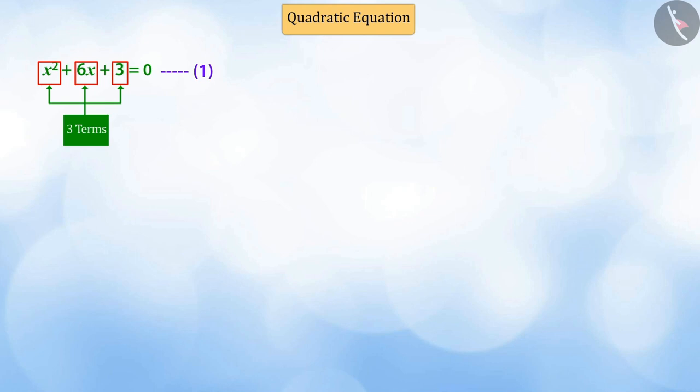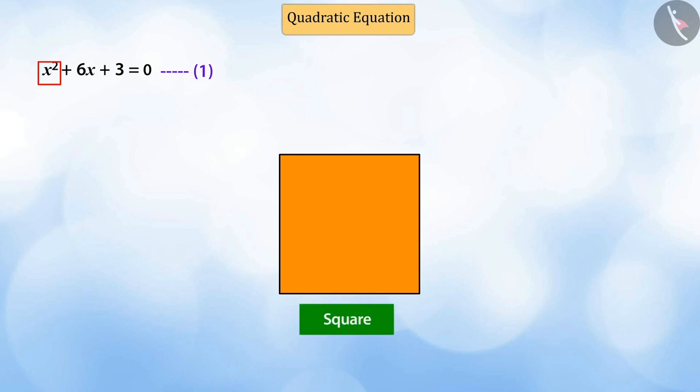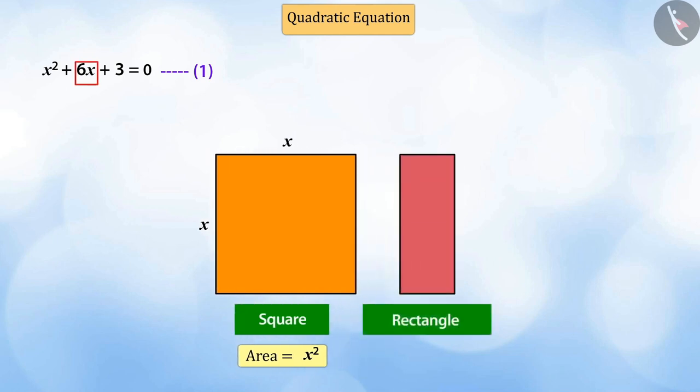Let us observe them. Talking about the first term of the equation, let it be a square, each side of which is x, whose area is x square. Similarly, looking at the second term of the equation, suppose it is a rectangle which has one side 6 and other side x, whose area is 6x.